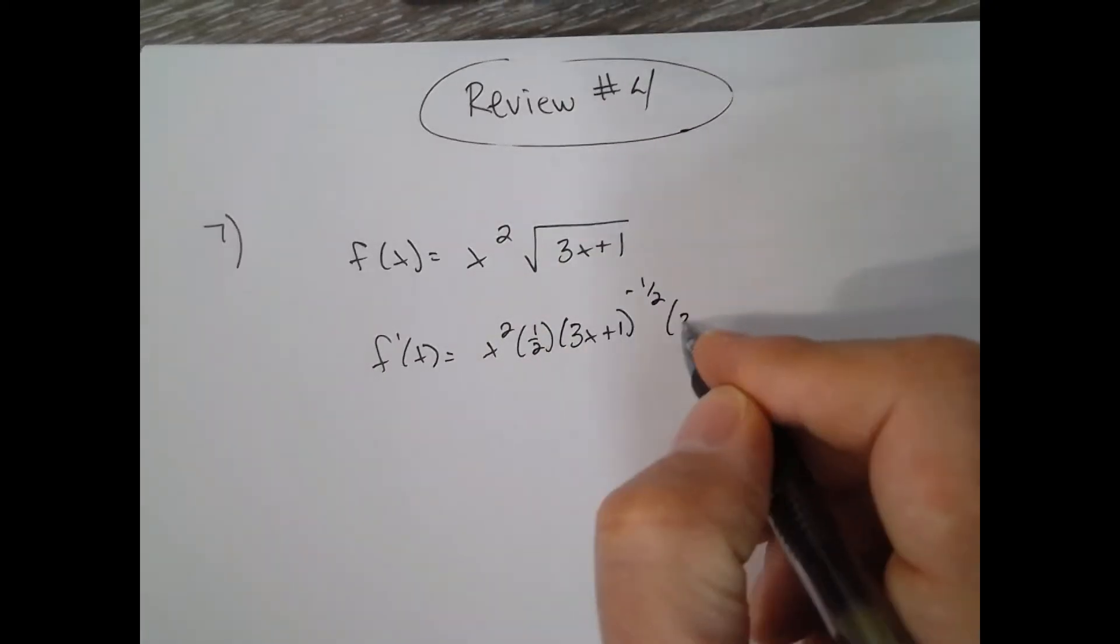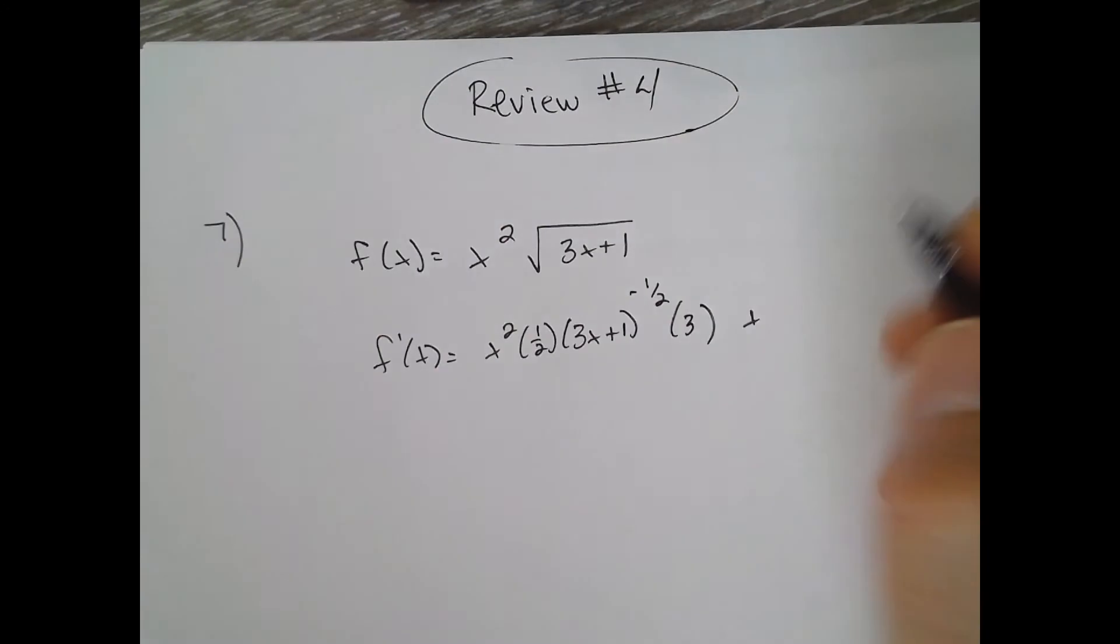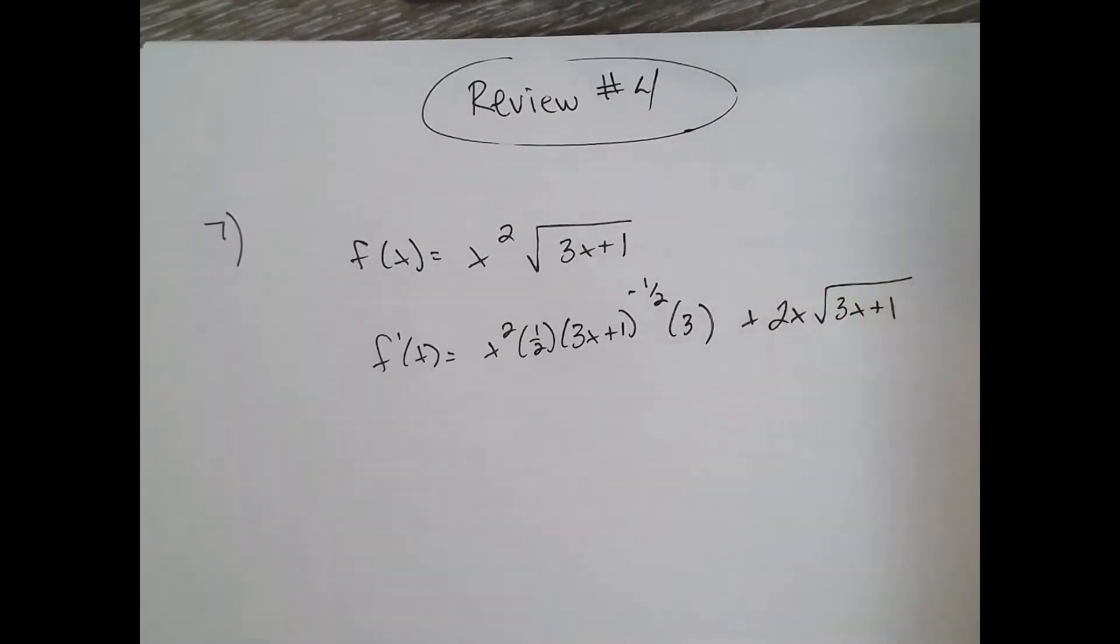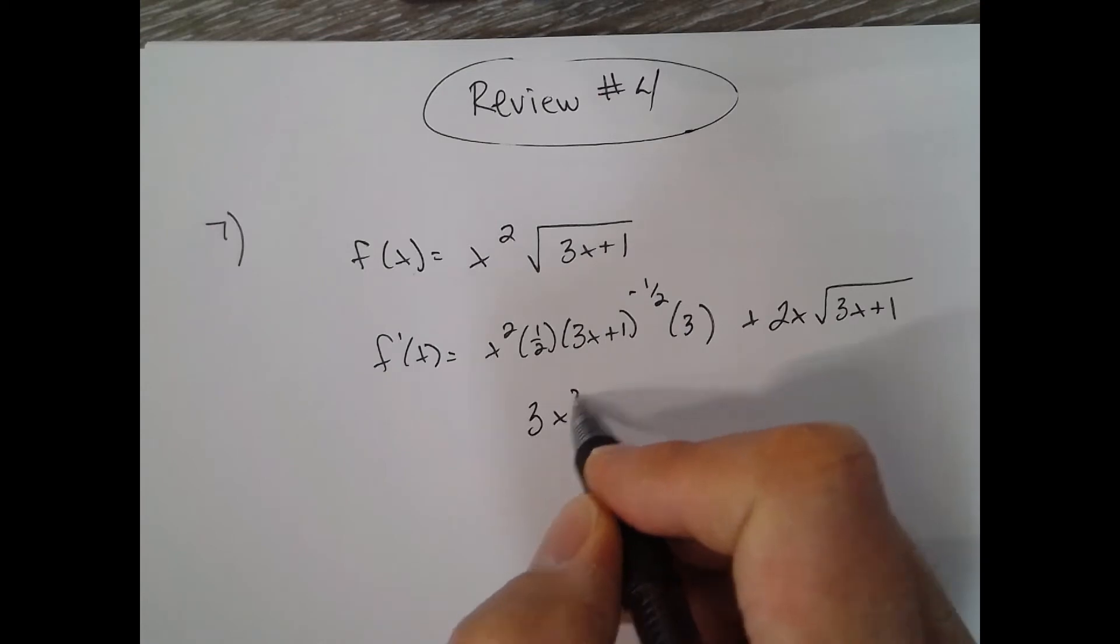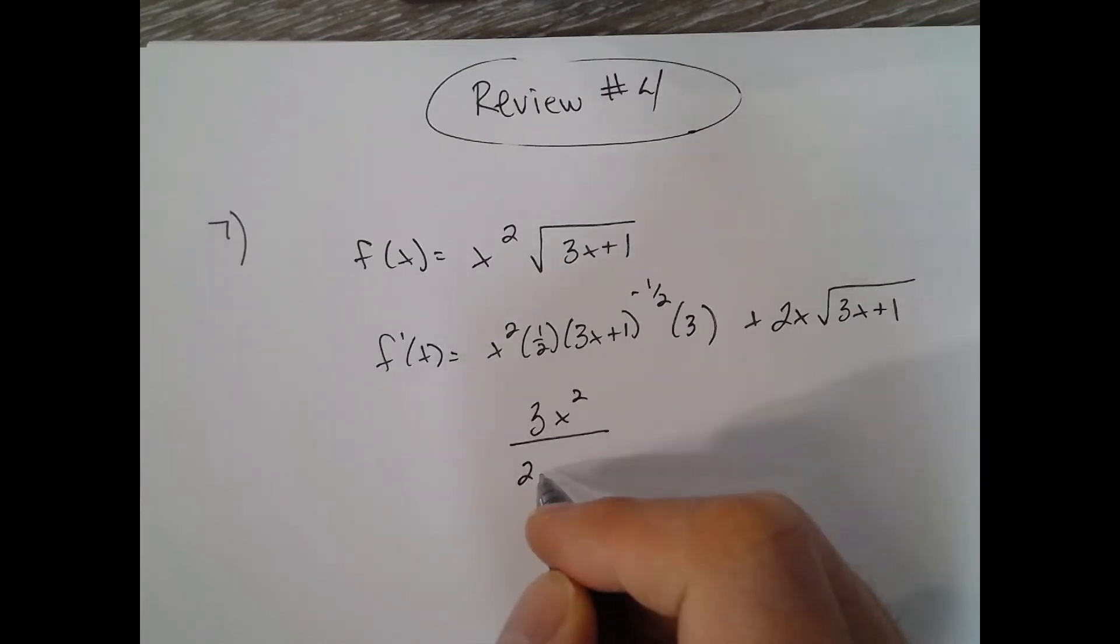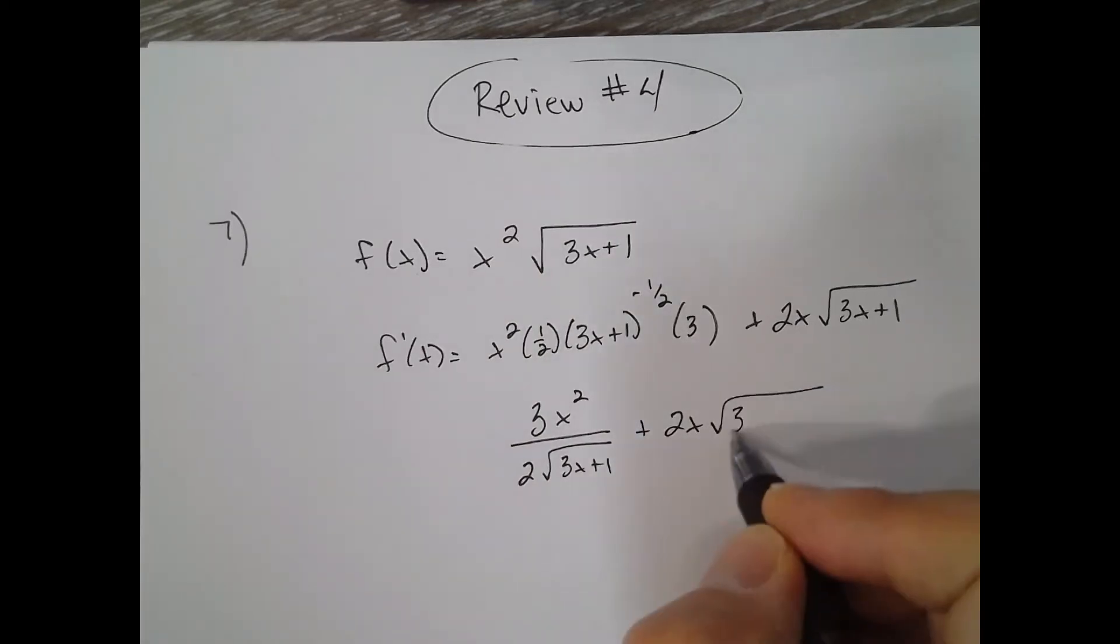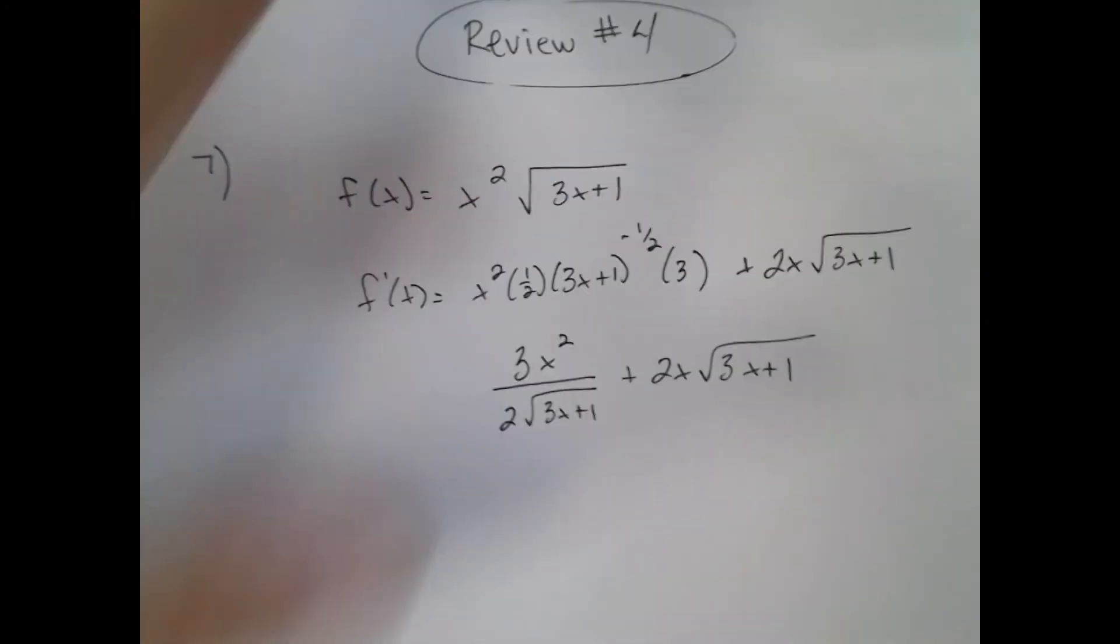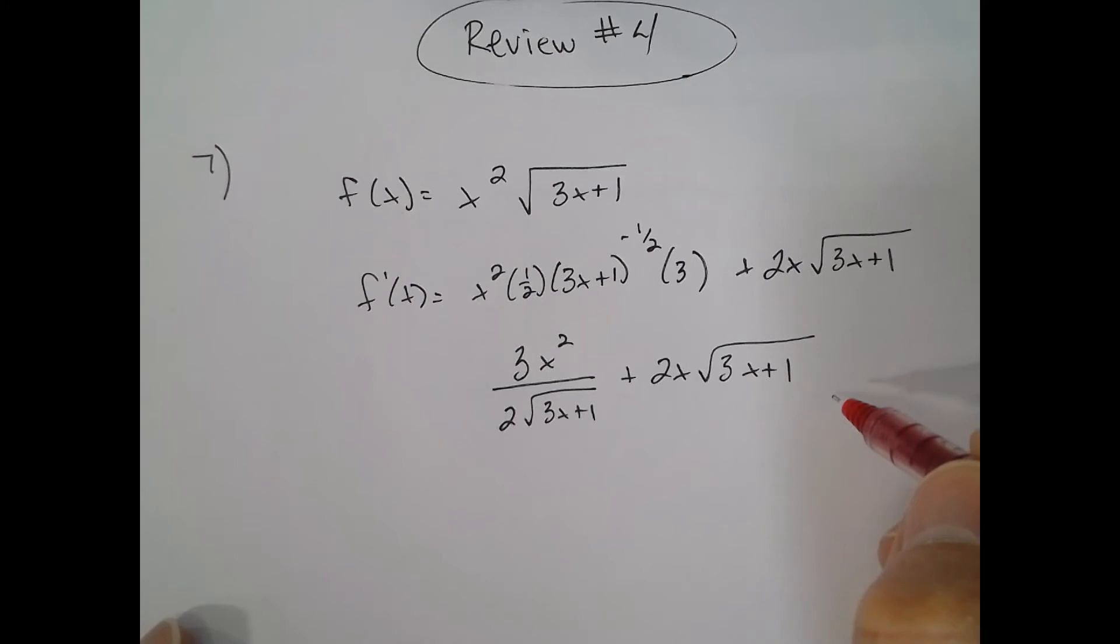Plus the derivative of x squared is two x times the square root of three x plus one. All right, so cleaning that up, I have three x squared over two square root of three x plus one. So if we combine these, top and bottom, because it's over one, multiply by square root of three x plus one times two.